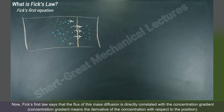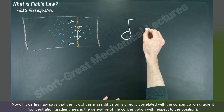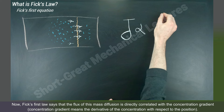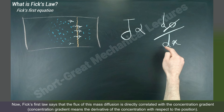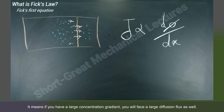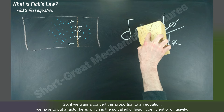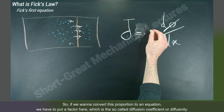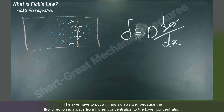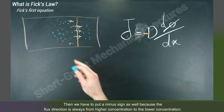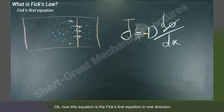Fick's first law says that the flux of this mass diffusion is directly correlated with the concentration gradient. Concentration gradient means the derivative of the concentration with respect to the position. So if you have a large concentration gradient, you will face a large diffusion flux as well. To convert this proportion to an equation, we put a diffusion coefficient or diffusivity as a factor, and also a minus sign, because the flux direction is always from higher concentration to lower concentration.